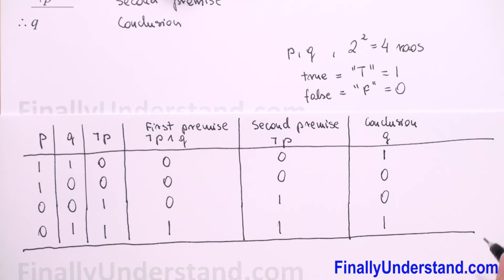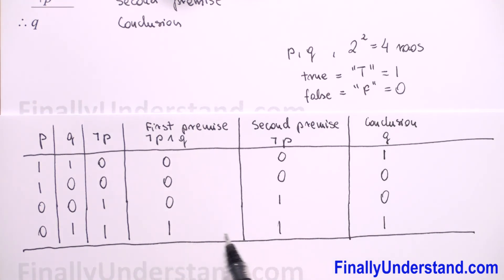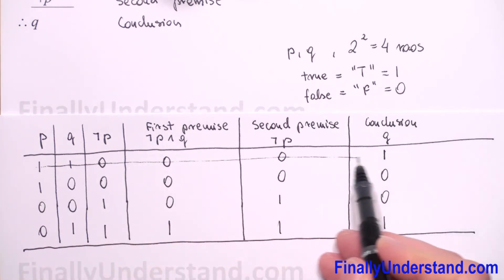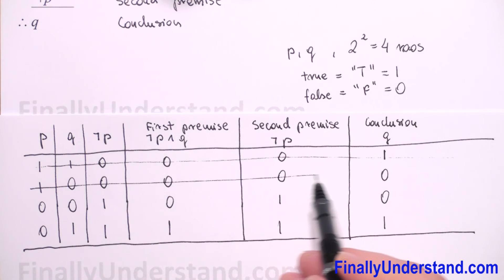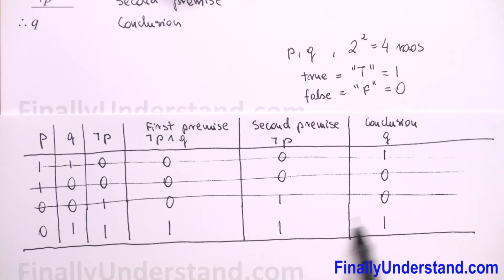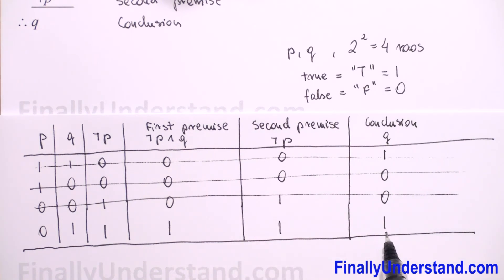Now we have to check if the conclusion is true in every row of the truth table in which all the premises are true. The argument is valid if that holds. The premises are true only in the fourth row, so we can cross out the first, second, and third rows. Looking at the fourth row, the premises are true and the conclusion is also true. Therefore our argument is valid.